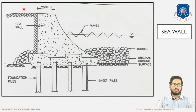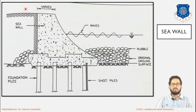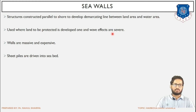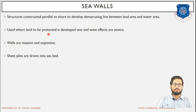The width depends on what sort of force or impact the sea wall is supposed to sustain and what activities will be carried out. Whenever the effect of waves is high and high-intensity waves are present for long durations, sea wall construction is done to ensure there is no erosion and no effect of these waves on the land portion. Sea walls are structures constructed parallel to the shore to demarcate the land area and water area. They are used where the land to be protected is developed and the wave effects are severe.